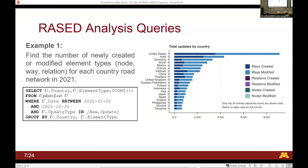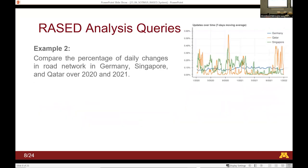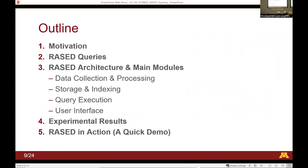For example: find the number of newly created or modified nodes with relation for each country and road type in 2021 — RASID will give you a visualization showing the top countries and number of updates. To produce this visualization, believe me it's not easy, especially given the amount of data. If you had a relational database and ran this simple query it would take a long time. Another example: compare the percentage of daily changes in road networks between Germany, Singapore, and Qatar. A third example: find the number of newly created or modified element types. These are all examples of queries RASID aims to answer.